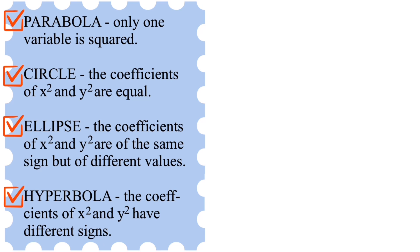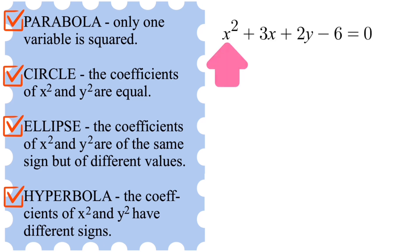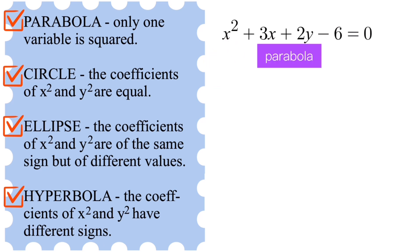Now let's go over some examples. In this example you will see that only one variable is squared, and that is x². This tells us that this is an example of a parabola.